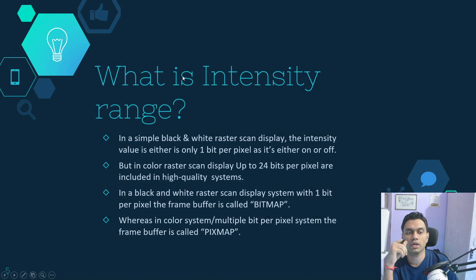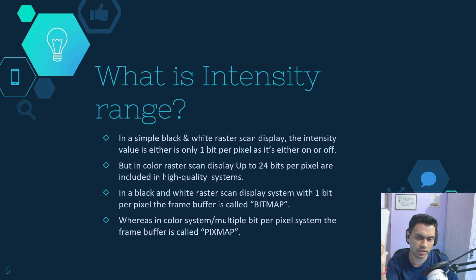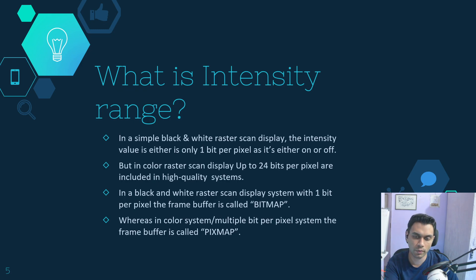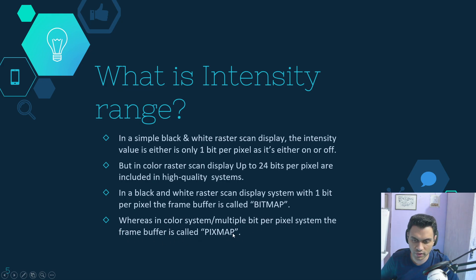In a simple black and white system, intensity is either 0 or 1 — on or off — so only one bit per pixel is stored, which is why it's called a bitmap. In a color raster system, up to 24 bits per pixel are used in high quality systems. In color systems where multiple bits per pixel are stored, the frame buffer is called a pixmap.